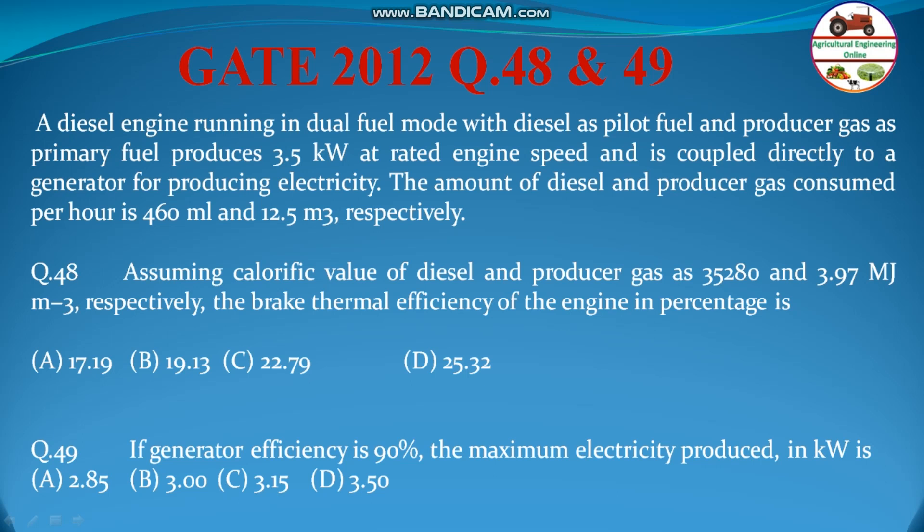Assuming the calorific value of diesel and producer gas as 35280 and 3.97 MJ per m³ respectively, the brake thermal efficiency of the engine in percentage is: A) 17.19, B) 19.13, C) 22.79, and D) 25.32.